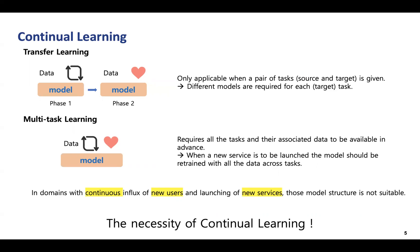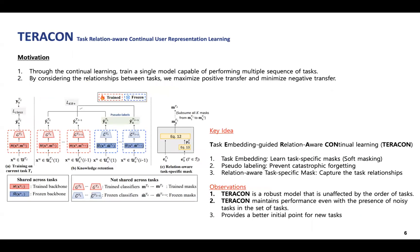Hence, we propose using continual learning to address this problem. In our work, called TERACON, we adapt a continual learning method to perform multiple sequential tasks within one model. Moreover, we consider the relationship between tasks to achieve better performance compared to existing approaches.